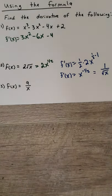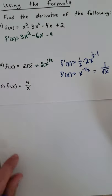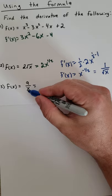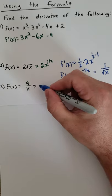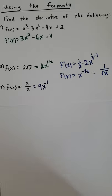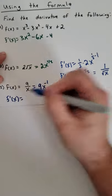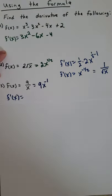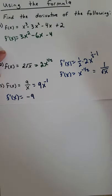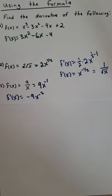Last basic example: 9 over x. Rewrite with a negative exponent: 9x to the negative one. Take the derivative — bring down the negative one, we get negative one times 9, which is negative 9, then subtract one from the exponent. So the derivative is negative 9x to the negative two.